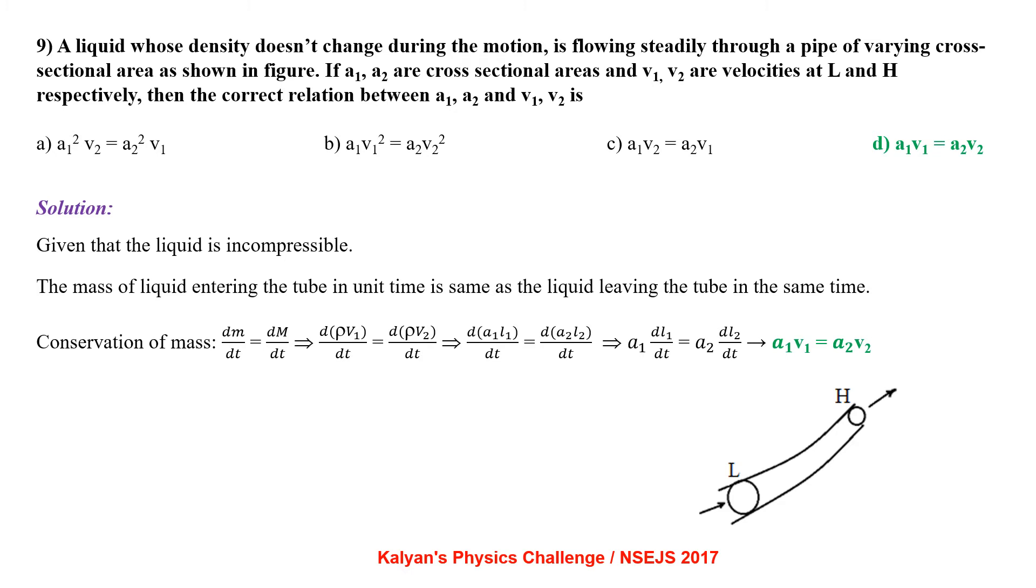Applying conservation of mass, dm by dt equal to d M by dt. Upon simplifying the relation, we get A1V1 equal to A2V2 known as equation of continuity.